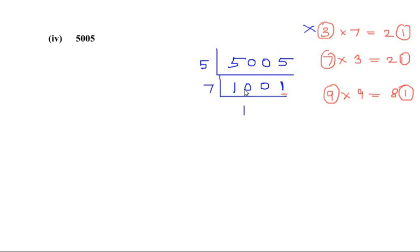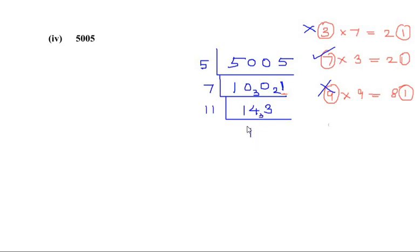Now let us divide 1001 by 7: 7 times 143 gives 1001, so 7 works. Now 143 goes in the table of 11: 11 times 13 gives 143. Finally, 13 is itself a prime number — 13 times 1 is 13. So we can write 5005 as a product of prime numbers: 5 times 7 times 11 times 13.